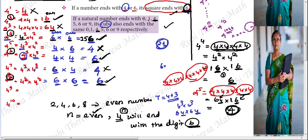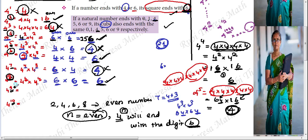When N is even, the answer ends with digit 6. When N is odd, the answer ends with the digit 4. For example: 4 power 1, 4 power 3, 4 power 5, 4 power 7 all end with 4. Check 9 (odd) and 10 (even) to verify.